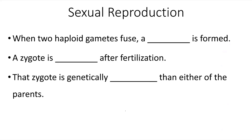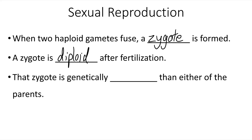When two haploid gametes fuse, a zygote is formed. A zygote is diploid after fertilization — it's the result of a sperm and egg fusing together. The sperm and egg are both haploid on their own, but when they combine together, the resulting cell is diploid because it will have two of each type of chromosome. In humans, this will typically be 46 chromosomes — 23 from the sperm and 23 from the egg. That zygote is genetically different than either of the two parents.